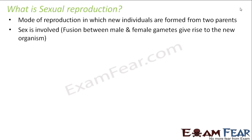Sexual reproduction is the mode of reproduction in which new individuals are formed from two parents. We need two parents — it cannot happen from a single parent. This also means there has to be sex differentiation: one male and one female. Sex here means mating between the two parents; the two parents must fuse or meet with each other.